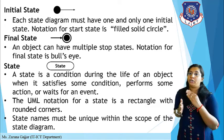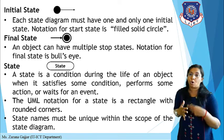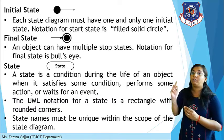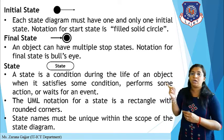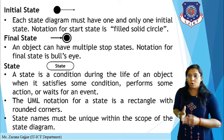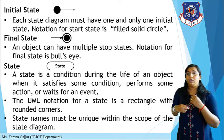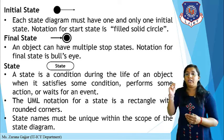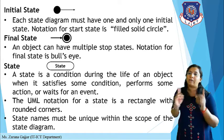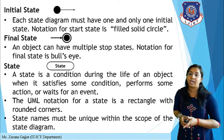A state is a condition during the life of an object when it satisfies some condition, performs some action, or waits for any event. The UML notation for a state is a rectangle with rounded corners, as seen in the image. The state name must be unique within the scope of the state diagram — you cannot give the same name to two different states. For example, you cannot name both the on and off states 'on,' as that would create a conflict.